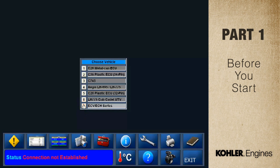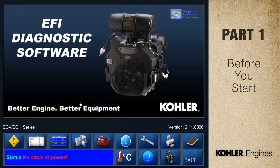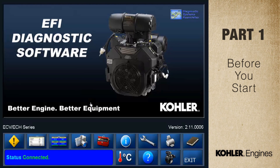I'm choosing the ECH ECV 630-749 engine. Remember, the key must be turned on to communicate. After we select the engine, the main screen is displayed. Check the status bar on the lower left to confirm the connection. You have to choose an engine type and the ignition key must be on to create a communication link. When the link is established, it says Status Connected.